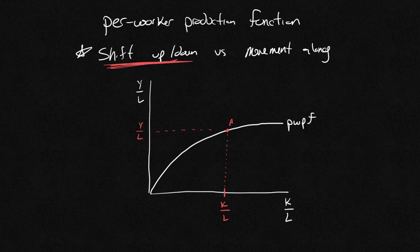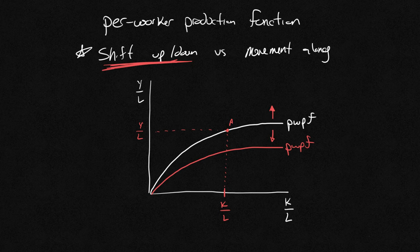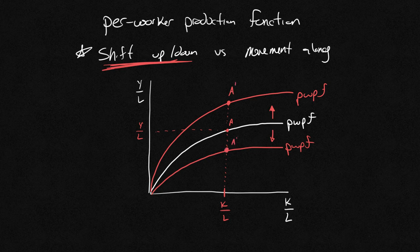And a shift up or down happens if there's a change in what we call technology or productivity. So it could be up or down, but we're going to have an entirely new per worker production function, either a lower one or a higher one. So per worker production function, a complete shift is brand new. And what we notice, let's call this a single prime. Let's call this one down here a double prime.